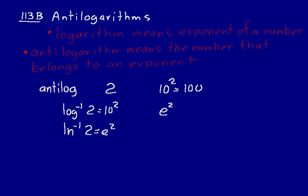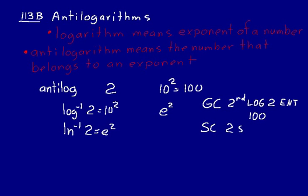Let's figure out the inverse log and the inverse natural log on our calculators. On a graphing calculator like the TI-83+, instead of hitting the LOG key, you hit the second key first, then LOG, then type in 2, and hit enter — you get 100. On a scientific calculator, you usually type in the number first, then hit your second or shift key, then the LOG button, and it should give you a value of 100.